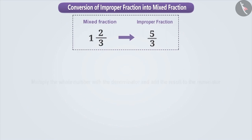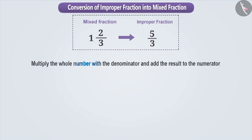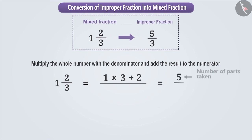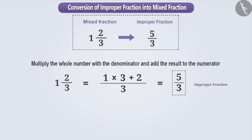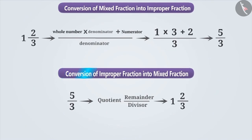In order to do this conversion mathematically, first we multiply the whole number with the denominator and add the result to the numerator. Here, 1 is multiplied by 3 and 2 is added to get 5. First, we find all parts taken. Now, below the result, in place of the denominator, we write the number of parts into which the whole is divided. By doing this, we get 5 by 3, which is an improper fraction. Therefore, in this way, we can express an improper fraction into a mixed fraction and a mixed fraction into an improper fraction.